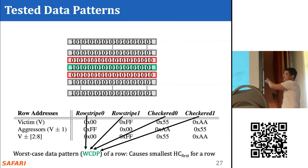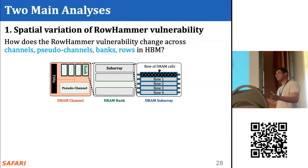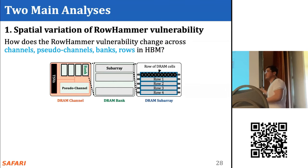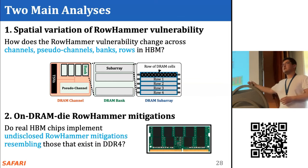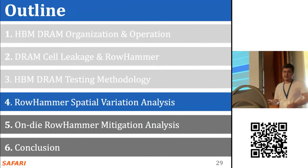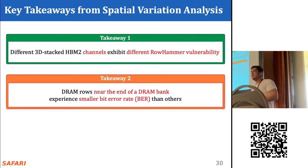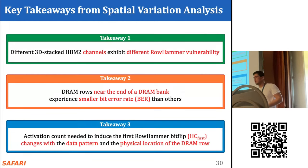We provide two main analyses: first, how rowhammer vulnerability varies across different HBM components in terms of bit error rate and HC_first; second, whether the HBM chip implements an undisclosed rowhammer mitigation resembling those known in DDR4 chips. Three key takeaways from our spatial variation analysis: different 3D-stacked HBM2 channels exhibit different rowhammer vulnerability; DRAM rows near the end of a bank show significantly smaller bit error rates; and HC_first substantially changes with data pattern and physical row location.